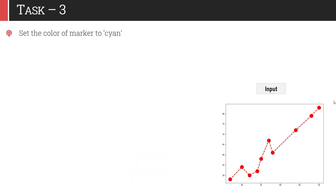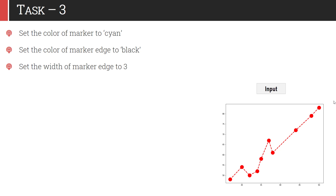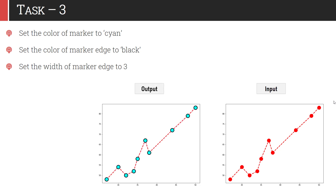We will use that output as the input to task 3. To customize the marker, you have to set the color of the marker to cyan. You also have to set the border of this marker to black color, and you also need to set the width of the marker border to 3 pixels. After performing this operation, your graph would look like this — it's a beautifully looking graph.